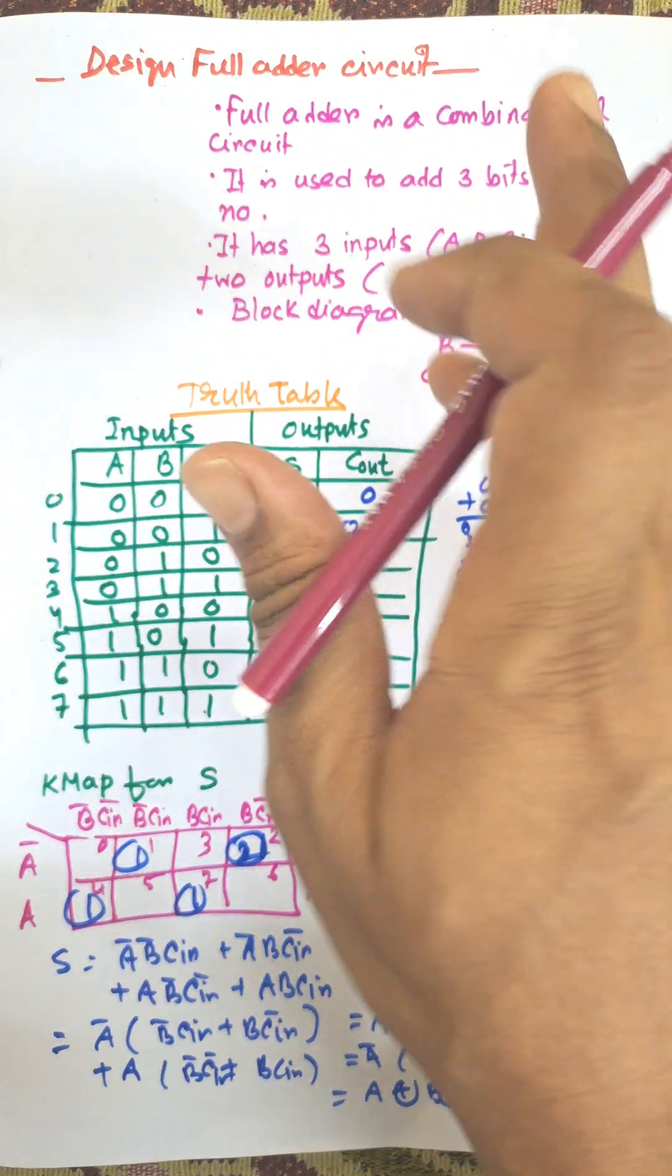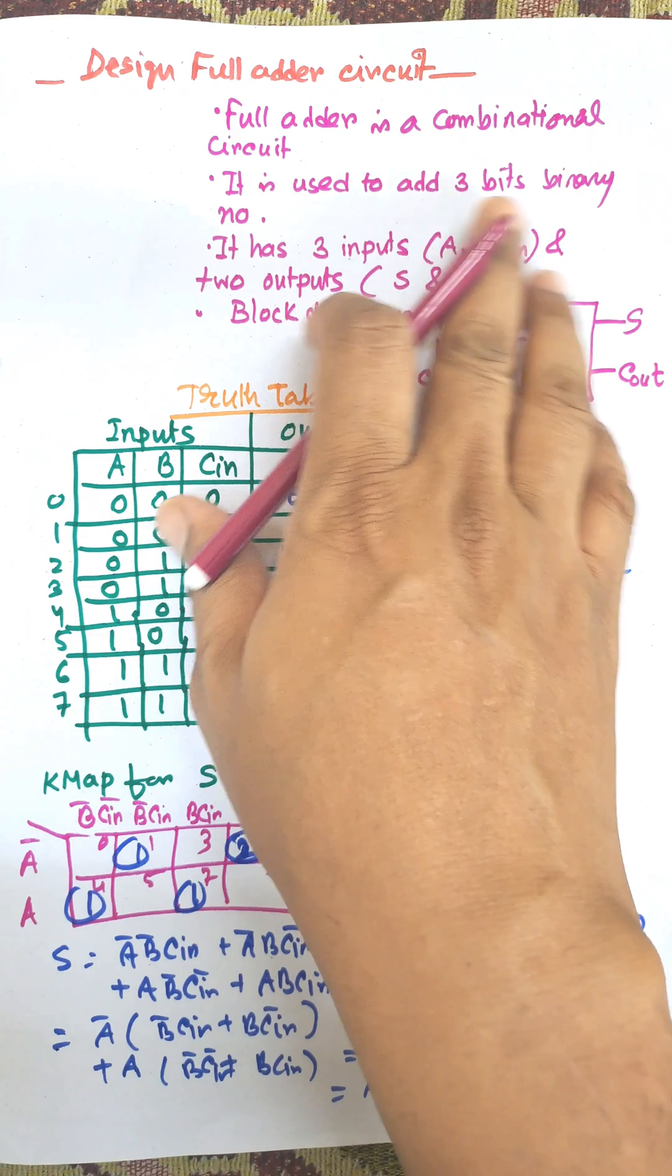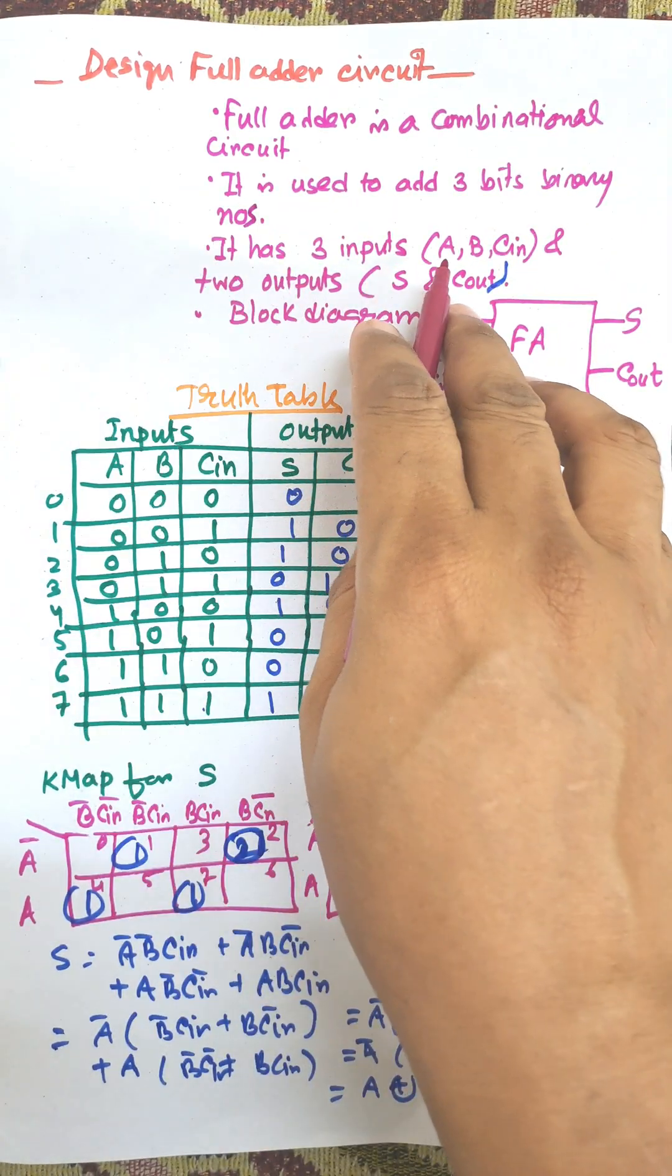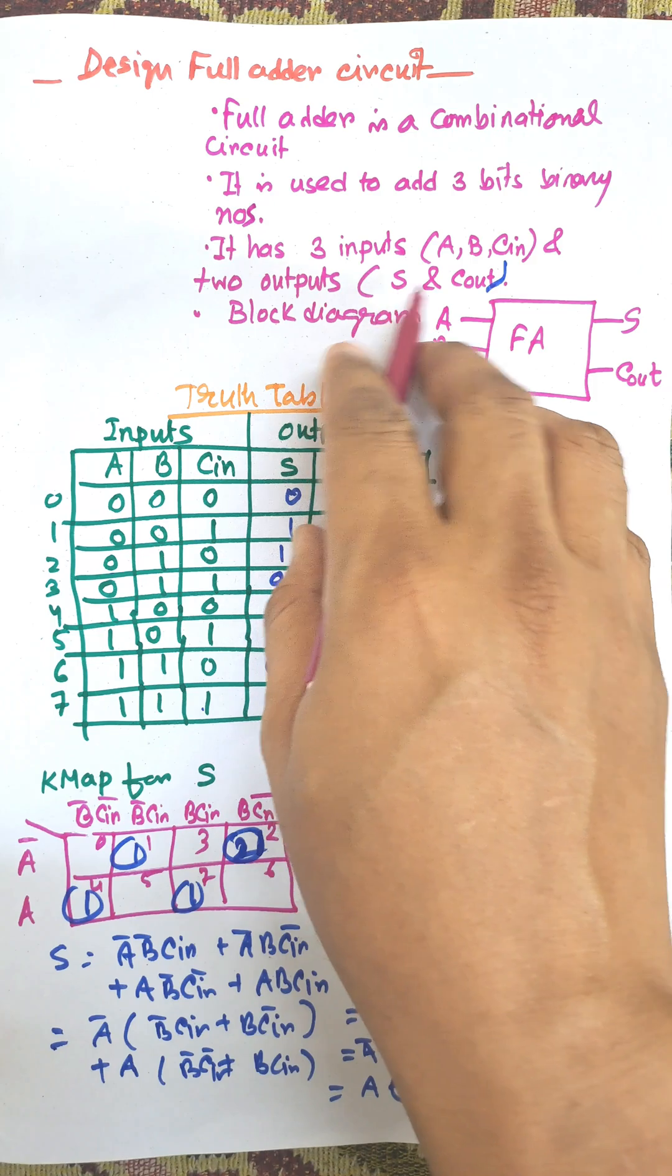In this video I am going to discuss full adder circuit. Full adder is a combinational circuit. It is used to add 3 bit binary numbers. It has 3 inputs A, B, C in, and 2 outputs, sum and carry out, S and C out.